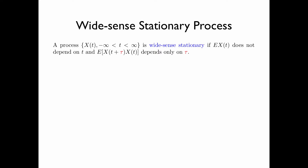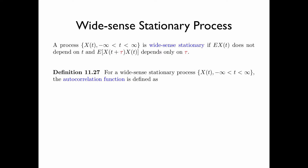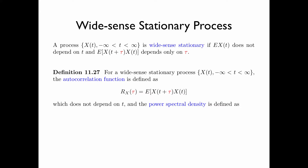A process x of t is wide-sense stationary if the expectation of x of t does not depend on t, and the expectation of x of t plus tau times x of t depends only on tau but not on t. For a wide-sense stationary process x of t, the auto-correlation function is defined as r_x of tau equals the expectation of x of t plus tau times x of t, which does not depend on t. The power spectral density, denoted by s_x of f, is defined as the Fourier transform of the auto-correlation function — that is, the auto-correlation function and the power spectral density form a transform pair.